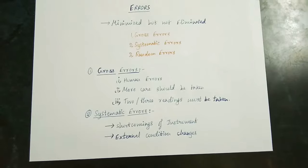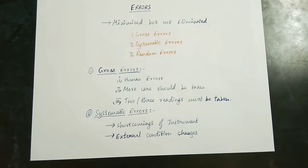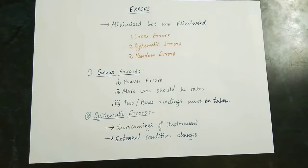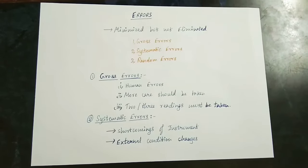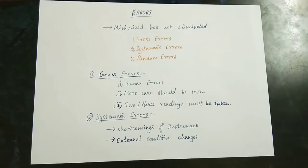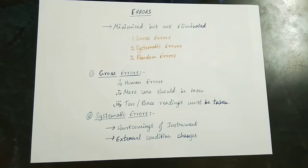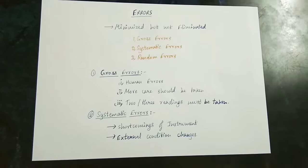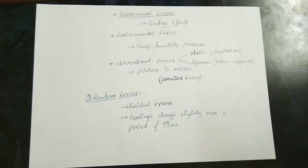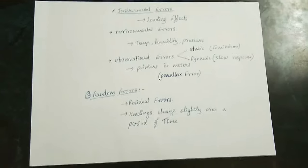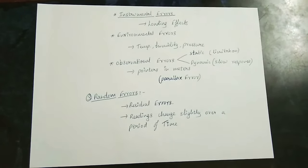The second type is Systematic Error. This is due to shortcomings of the instrument or external condition changes. If you have any problem with the instrument or with external conditions, there are systematic errors in the measurement system. There are three types of systematic errors: Instrumental errors, Environmental errors, and Observational errors.